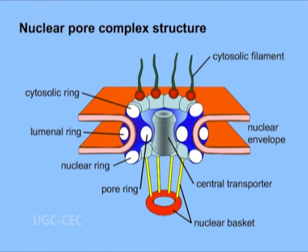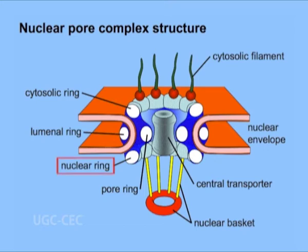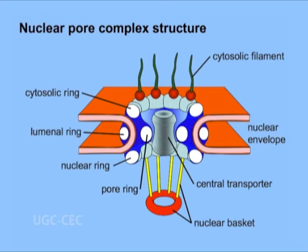The NPC is cylindrical and displays an eight-fold symmetry. At the centre of the pore is a spoke assembly of eight annular units anchored to the membrane by luminal subunits. Attached by column subunits are two rings, one facing the nucleus and the other the cytoplasm. The nucleoplasmic site of the NPC is decorated with fibrils, and a cage-like assembly is attached on the nucleoplasmic side.